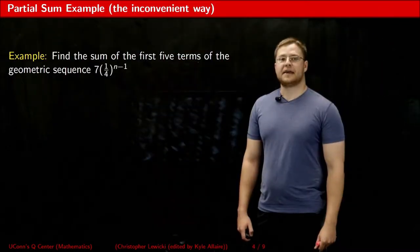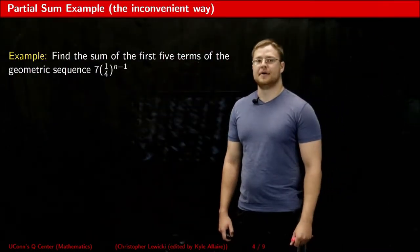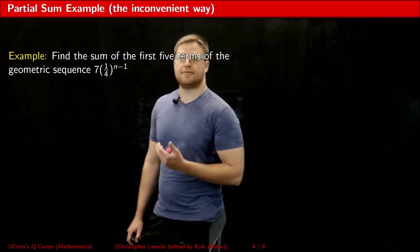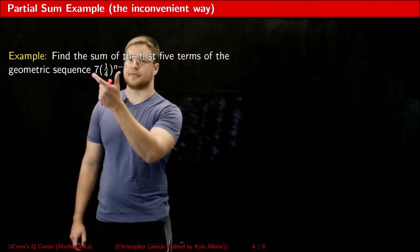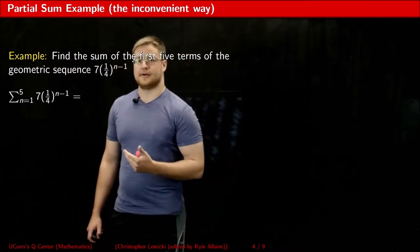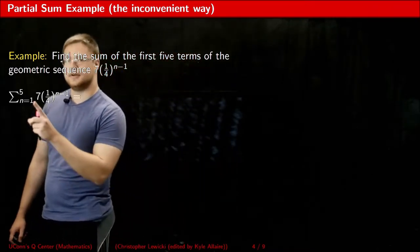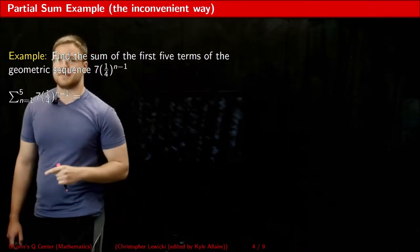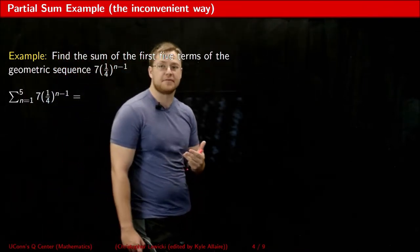Now let me show you an example of a partial sum. Let's pretend we wanted to find the sum of the first five terms of this geometric sequence. What we could do is set it up with sigma notation, where we start with one and end with five, so that we're getting the sum of the first five terms.